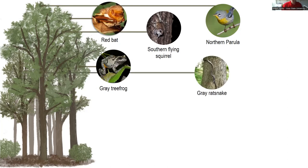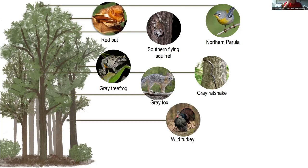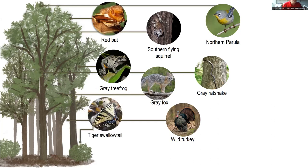Gray rat snakes are a rather arboreal species — meaning they live in trees — and there are lots of snakes found in the forest at lower levels as well. The gray fox I probably have a little high in the tree, but gray foxes do sometimes climb trees, and they're a forest-dwelling species we're concerned about in terms of long-term population declines. Wild turkeys I put right in the middle because they split their time between spending days and nesting on the ground and roosting up in mature trees.